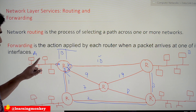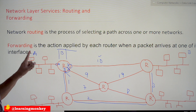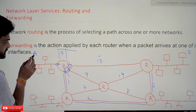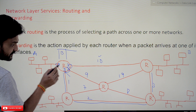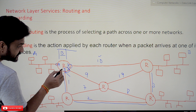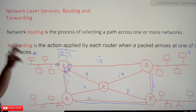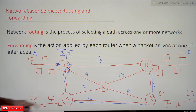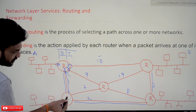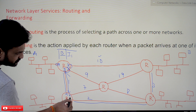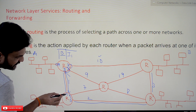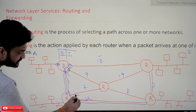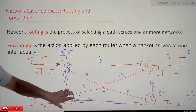The forwarding or routing table contains the source address and destination address. For example, source A and destination B — where B is connected to this router. If data is received from A and must be transmitted to B, the table says it must take interface I1. Similarly, if data arrives from I1 and must go to B, it forwards through I3. Every router creates its own forwarding table using the routing algorithms.